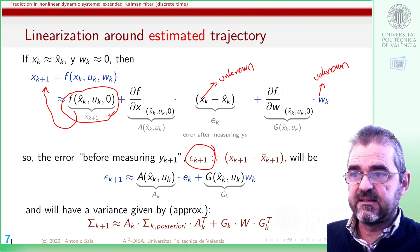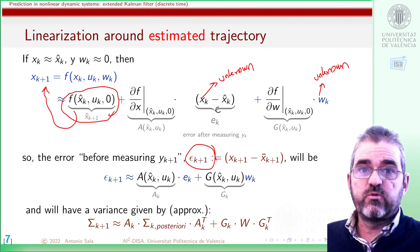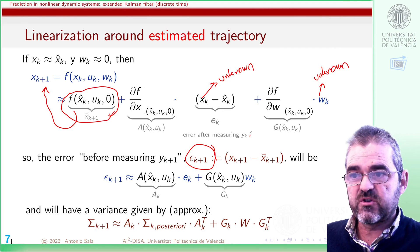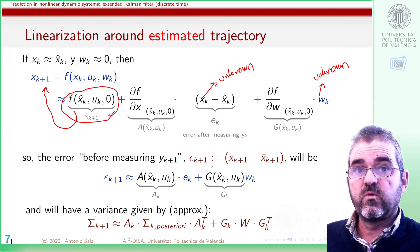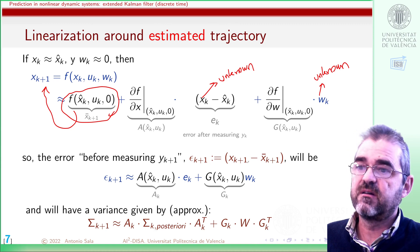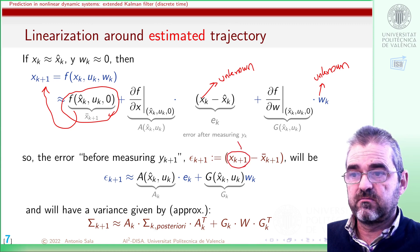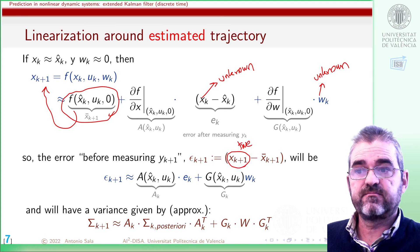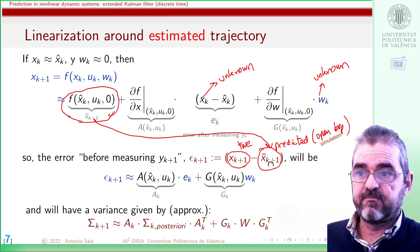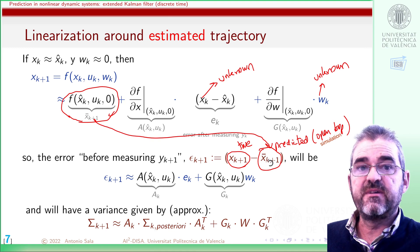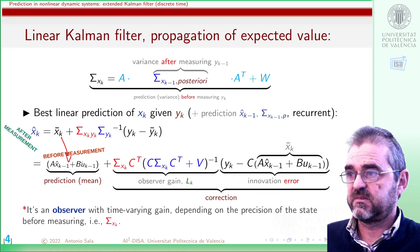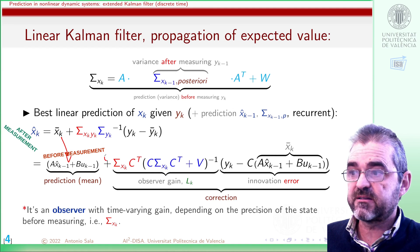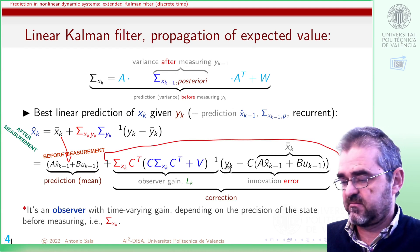This lowercase e will be assumed to be the actual error after incorporating measurement y_k, but epsilon will be the propagation of that error one step ahead — the actual difference between the true unknown plant's next state minus my open-loop prediction, bar x. Bar x will be prior to measuring; hat x will be after measuring. It's just something that will need to be corrected.